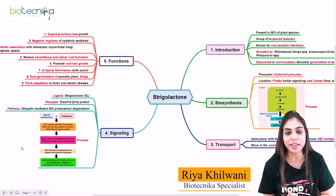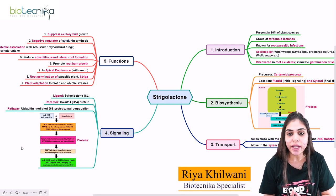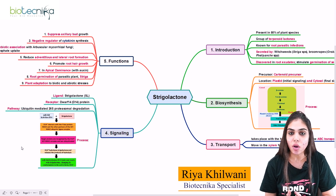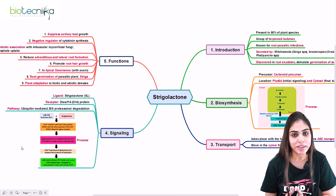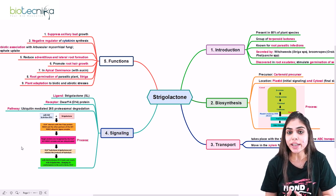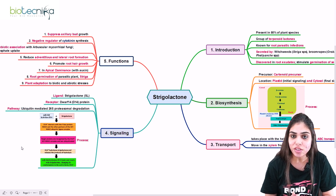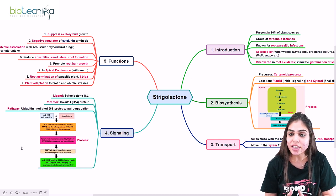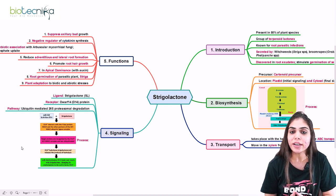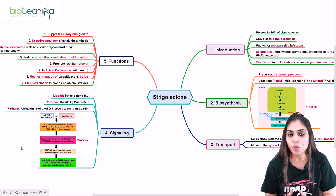Hello everyone, welcome to Biotechnica. Today I will be talking about strigolactone phytohormone, which is an important hormone for exam purposes — whether it is CSIR NET, GATE, DBT, and others. We will be learning about the biosynthetic mechanisms of this plant growth regulator, transport pathway, signaling cascade, as well as the functional profile. Let's understand all these points one by one.